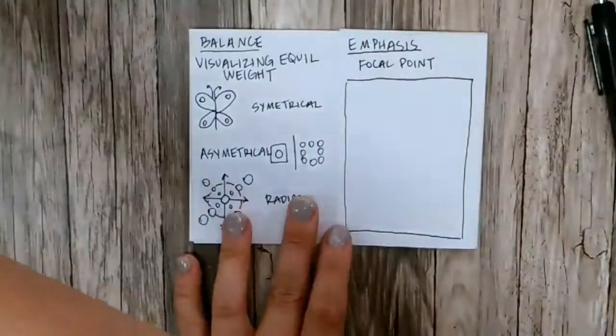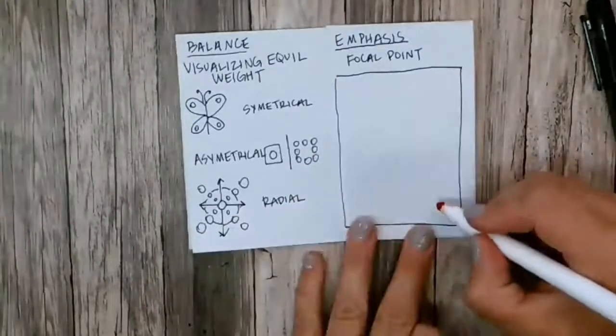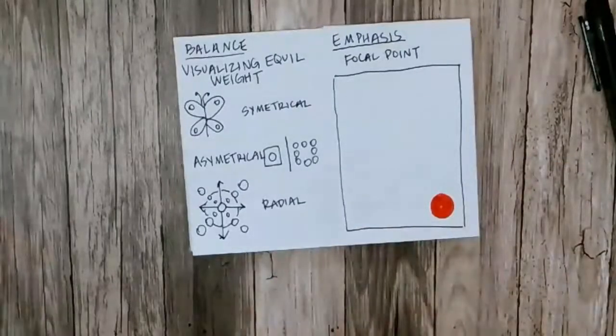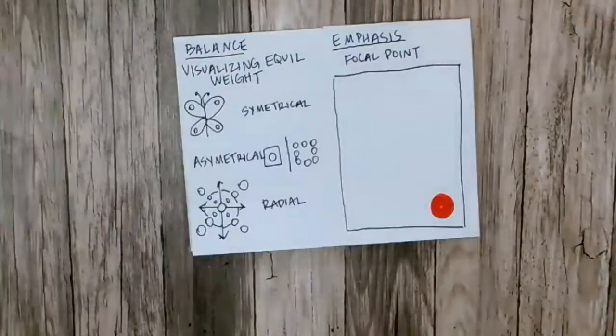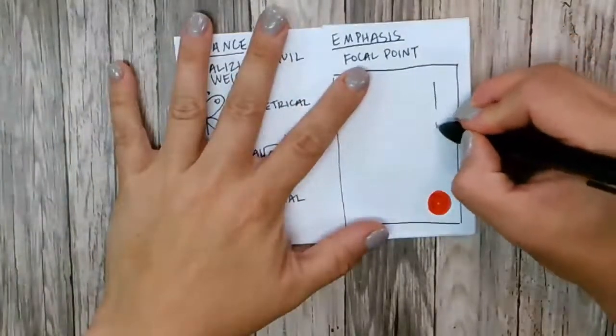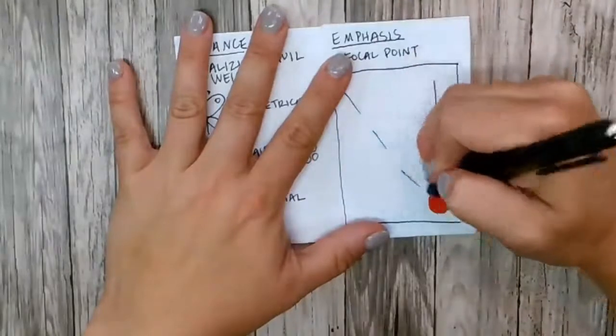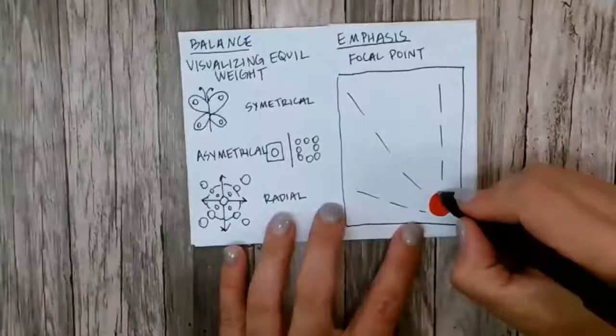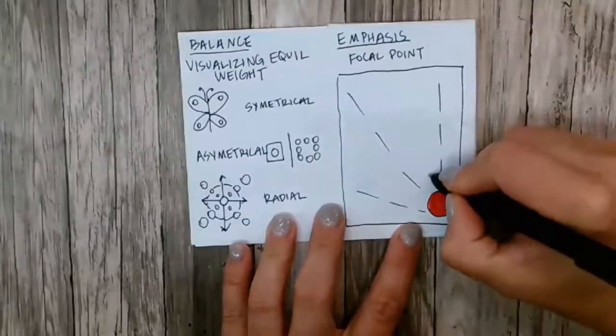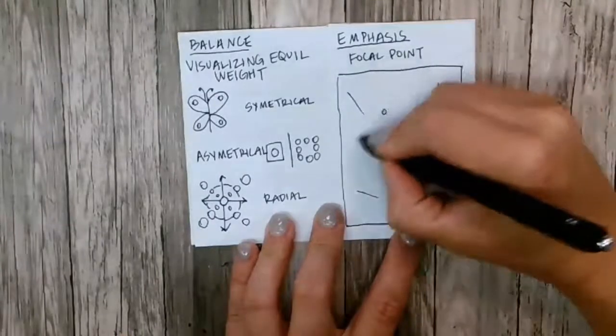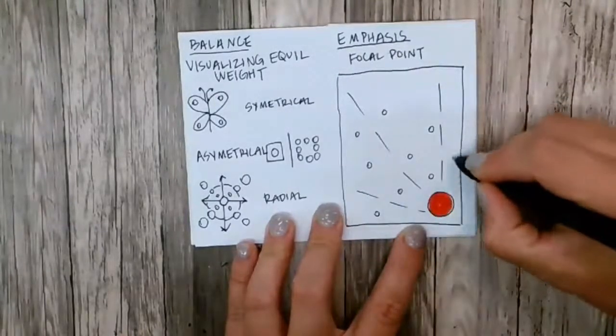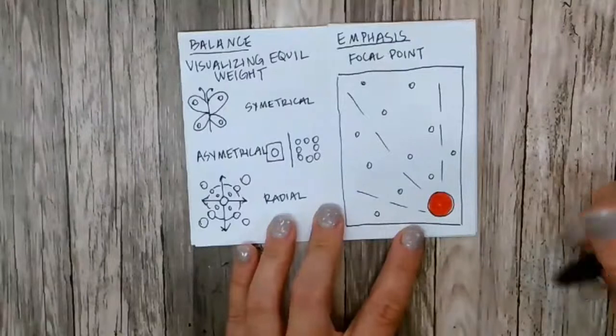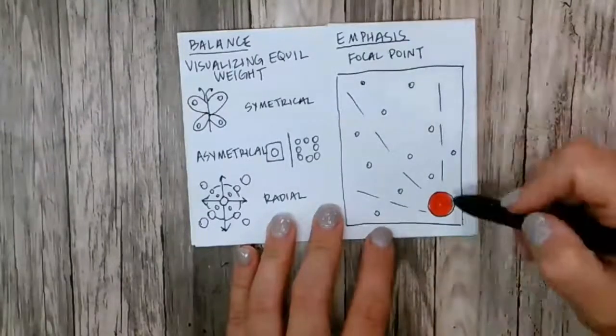So I'm just going to draw a picture plane here. And one way we can make emphasis is by using color. One way we can make emphasis is by leading lines. One way we can do it is by size, so we've got a really large circle here, and then all around it we have smaller circles. So that creates a very strong focal point.